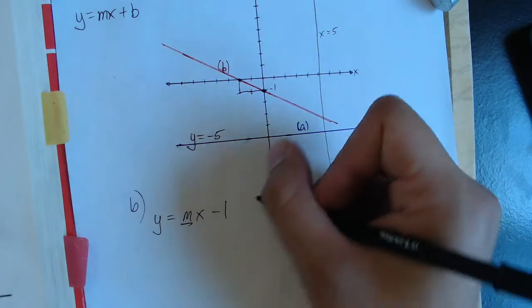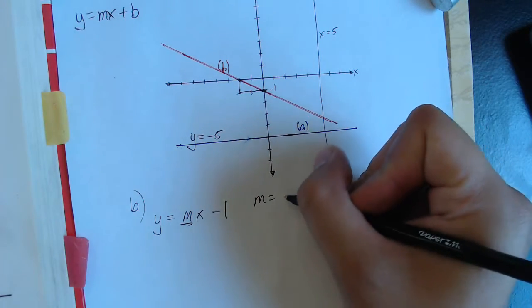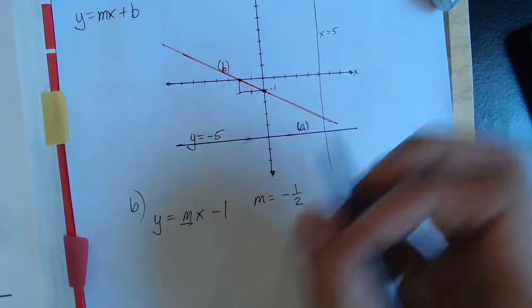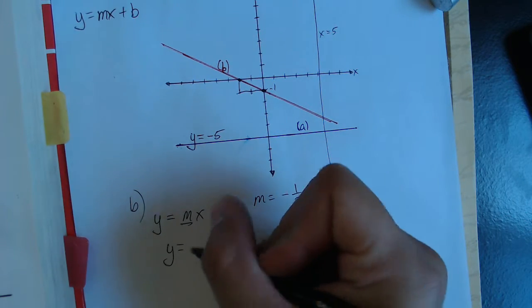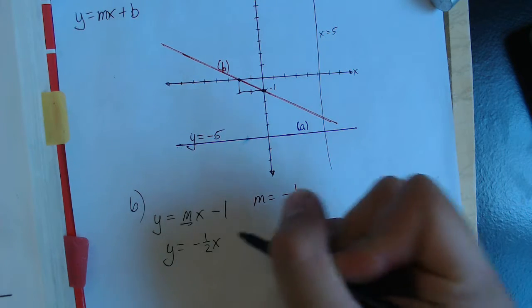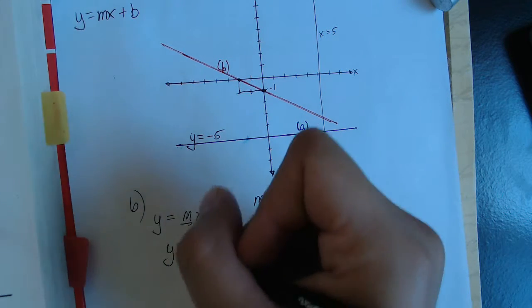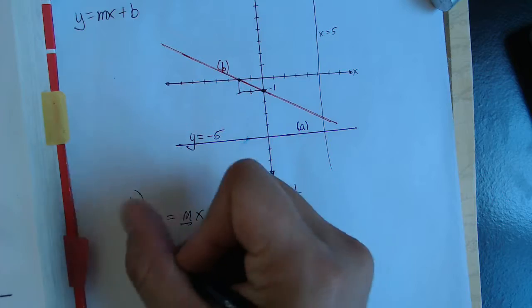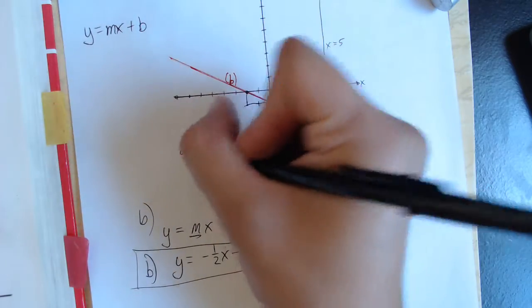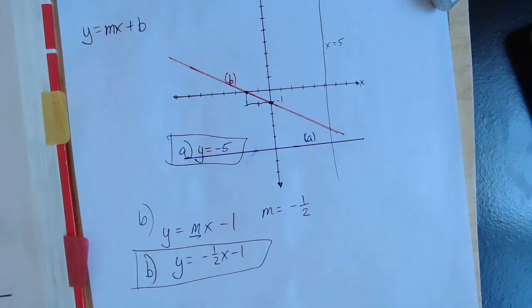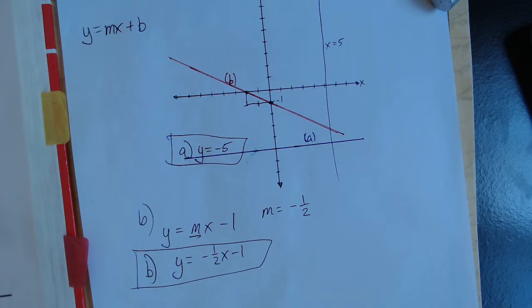So it would be negative one half. So in this case, the slope, or m, would equal negative one half. So this equation of the line is going to be y equals negative one half x minus one. And that is the equation of line b. And if we remember, line a up here is y equals negative five.